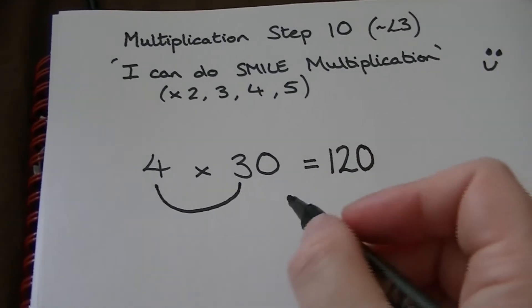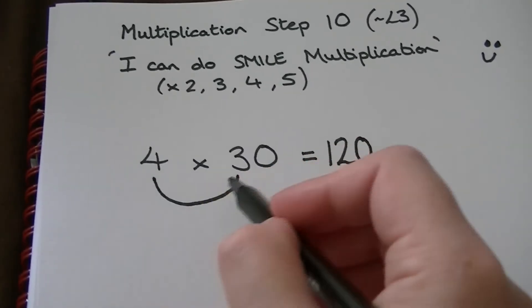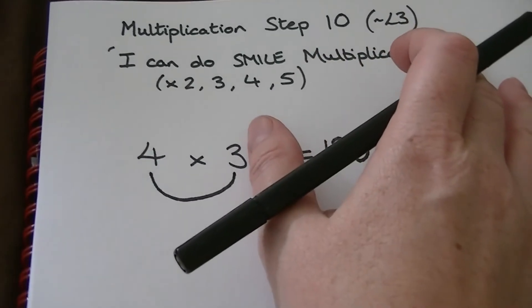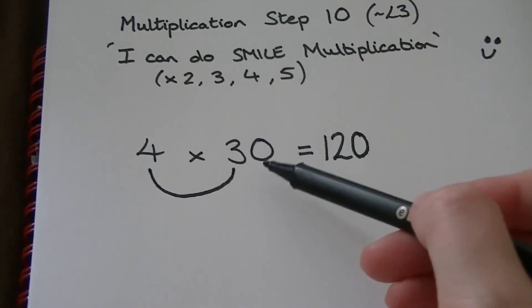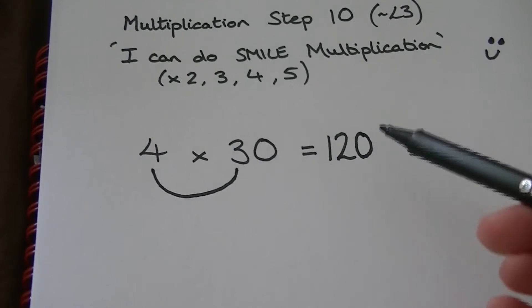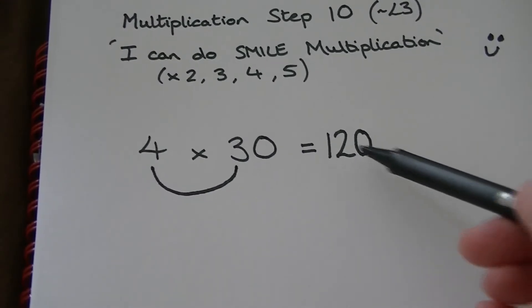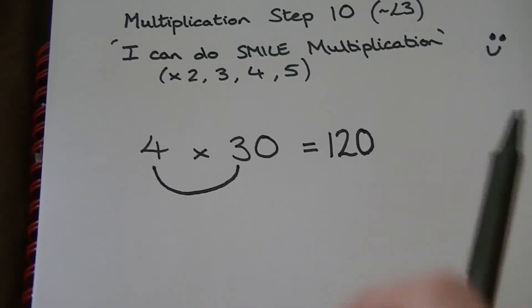The reason behind that is because if it was just 4 times 3 that would be 12 but we've actually multiplied one of the numbers by 10. We've made it 10 times bigger so the other side of the equal sign needs to be 10 times bigger as well.